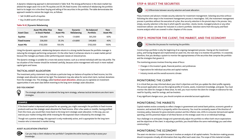Tactical Asset Allocation: the investment policy statement may indicate a particular long-run balance of equities to fixed income, but this strategic asset allocation need not be rigid. The statement may also allow for some short-term tactical deviations from the strategic mix. This strategy, called tactical asset allocation, allows you to capitalize on investment opportunities in one asset class before reverting to the long-term strategic asset allocation. The strategic allocation is considered the long-term strategy, whereas tactical deviations are short-term strategies. For example, if the bond market is depressed and poised for an upswing, you might overweight the portfolio in fixed income products. After a few weeks or months, having profited from this move, you would then move back to the long-term strategic asset allocation, exercising your market timing skills while investing for the expected return indicated by the strategic mix.